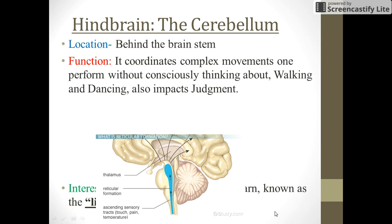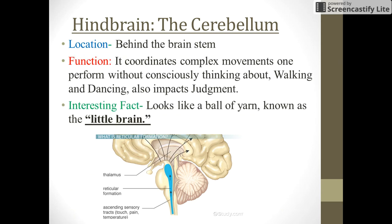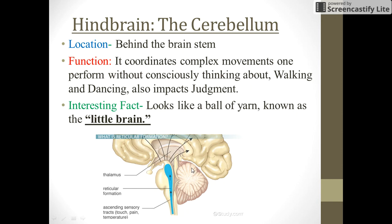The cerebellum hangs off the back of the brainstem. It coordinates movement and helps with walking and dancing. It's also impacted with judgment. People know it as the 'little brain' because it kind of looks like one — also described as looking like a ball of yarn. It hangs in the back of your head, so if you're ever hit hard in the back of the head and lose your balance, that's where the cerebellum is.